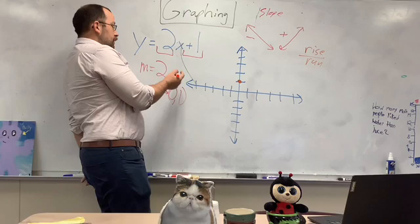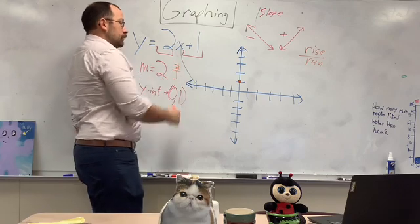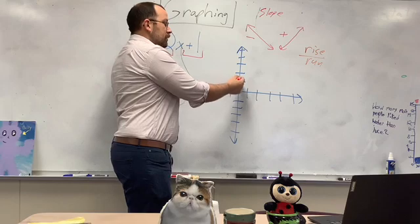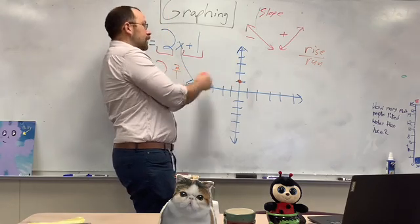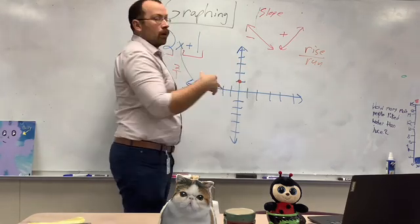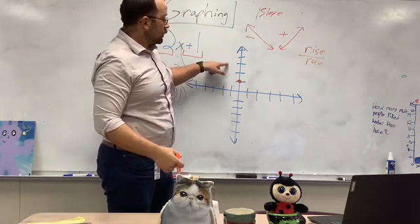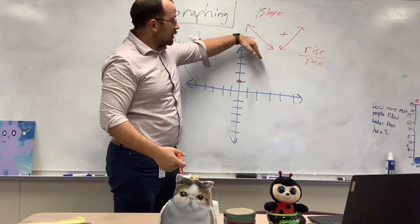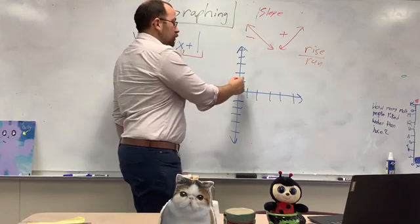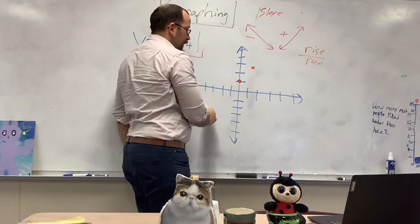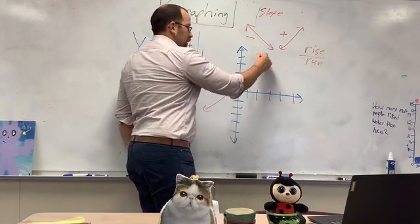This is technically a fraction, which is two over one. So I'm going to do my rise first. I'm going to rise up two because that's my top, and I'm going to run one, that means left or right. Now if I run left and I make that line, it's going to look negative. So I need to move it to the right. Now it looks like a positive line. Connect the dots.